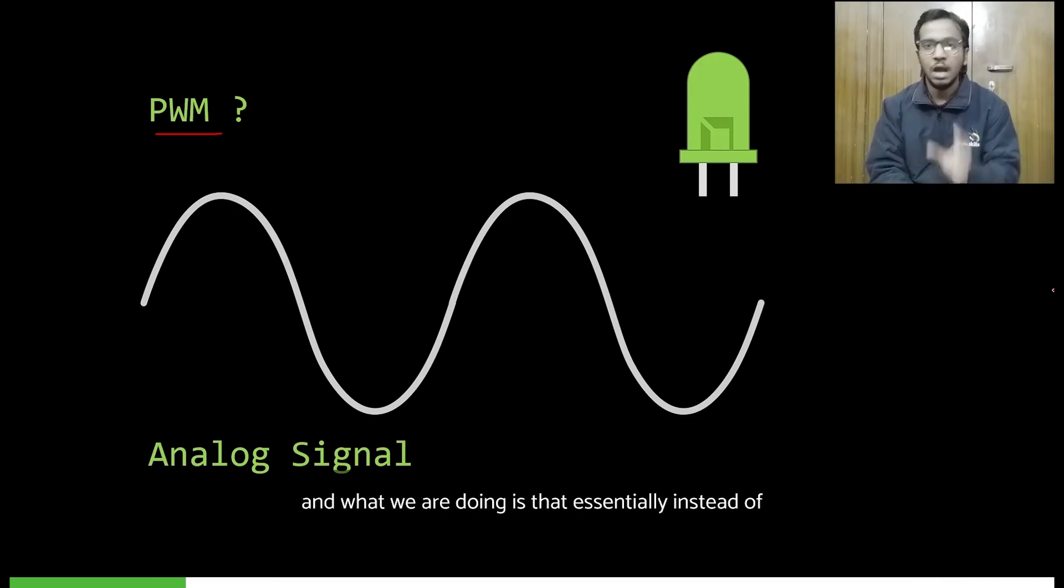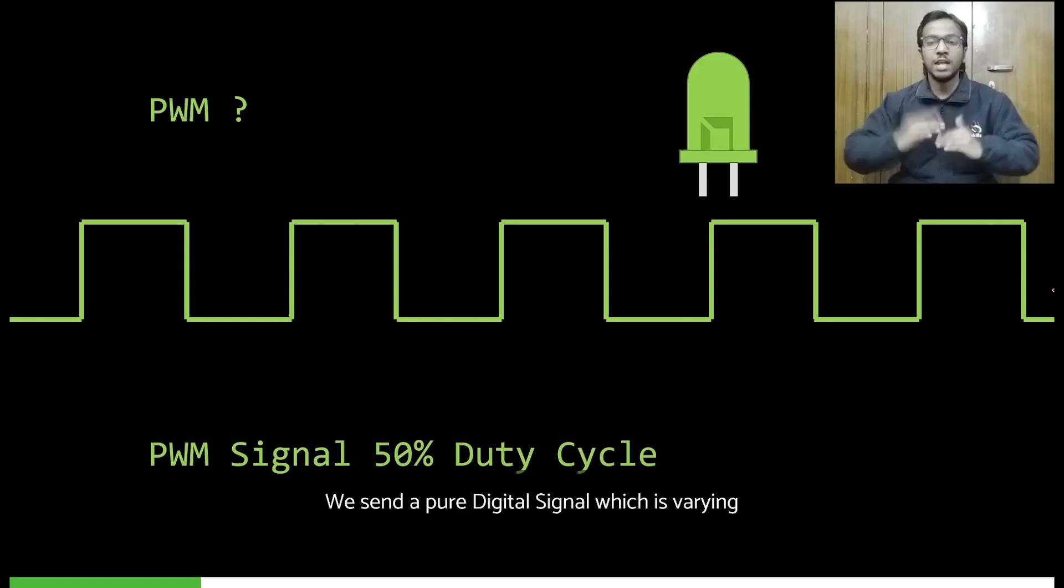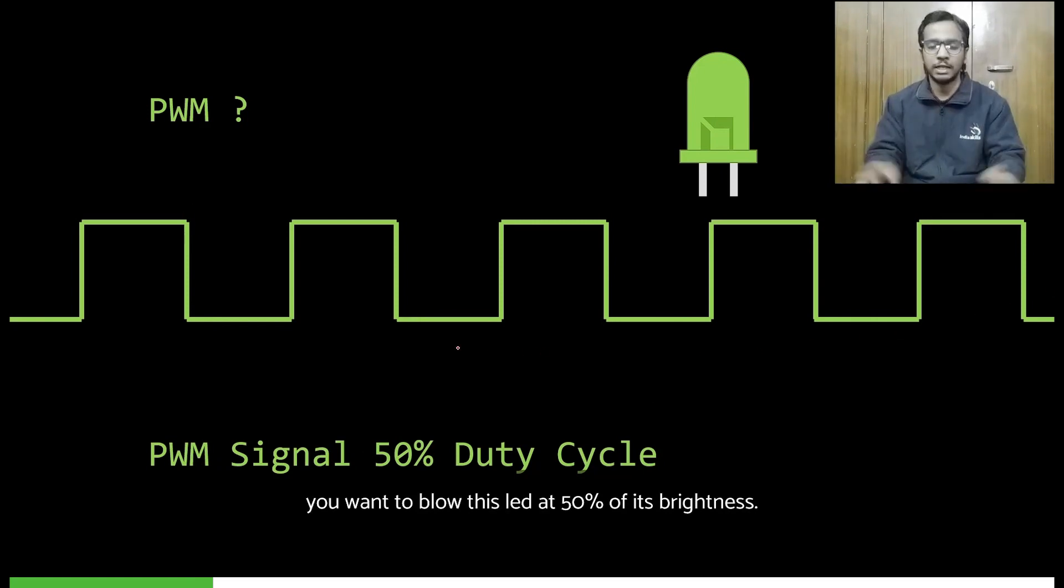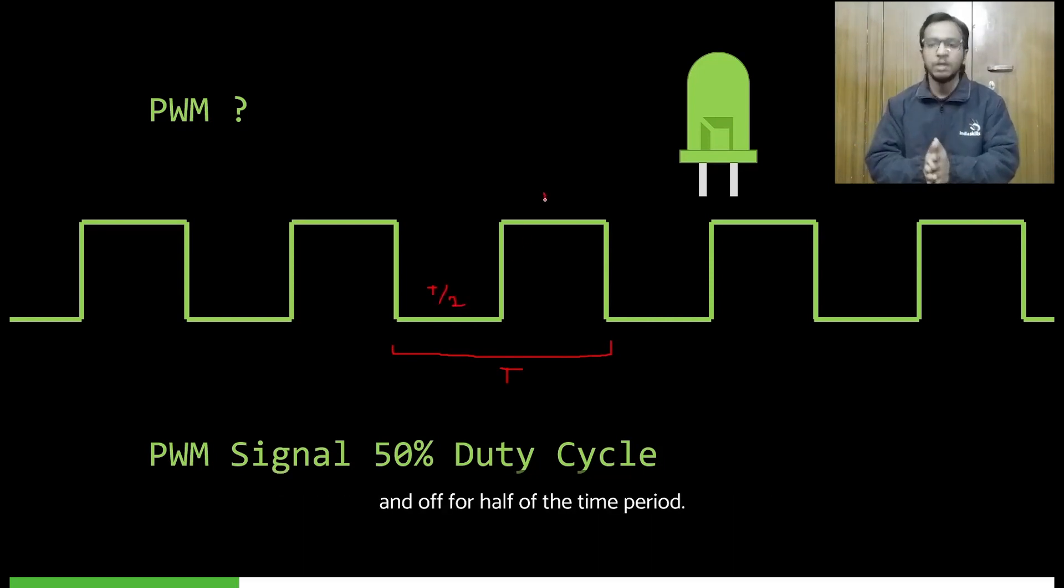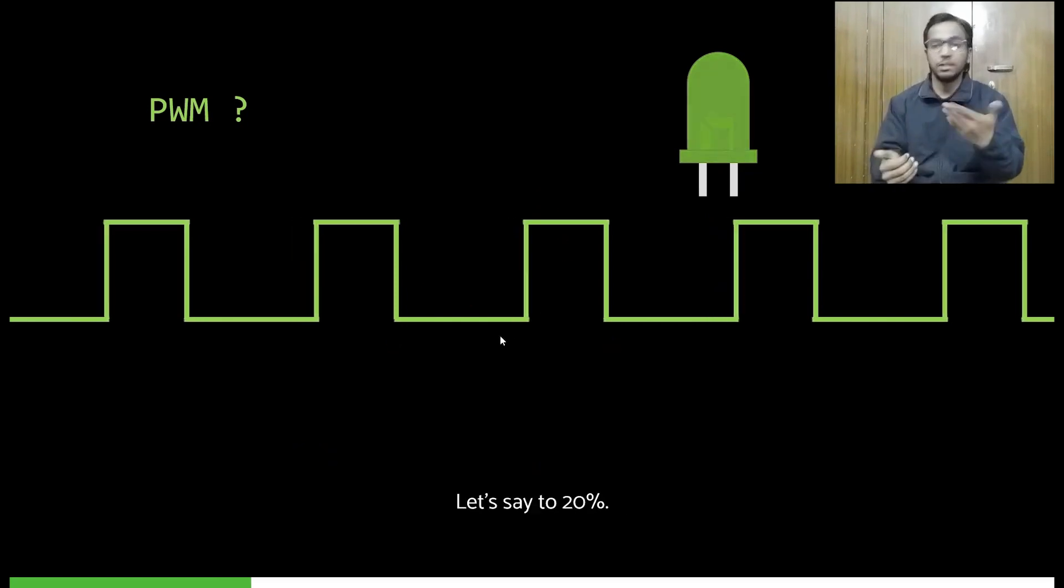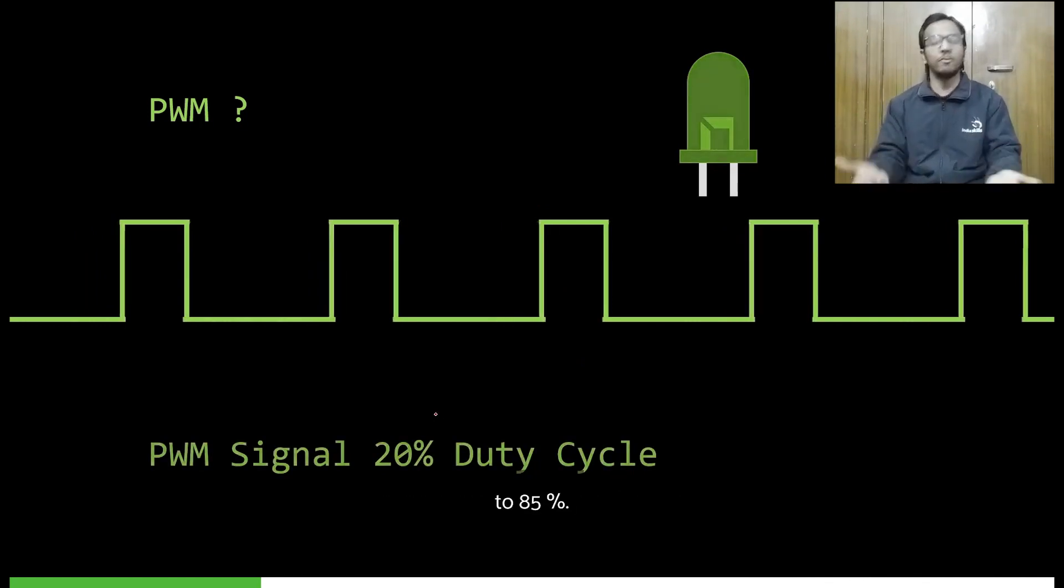So instead of having an analog signal, we use this technique called pulse width modulation. What we're doing is essentially, instead of sending an analog signal, we send a digital signal which is varying at a very high frequency. Here, for example, you want to glow this LED at 50% of its brightness, so you send a signal with 50% duty cycle. Duty cycle stands for the ratio between the on time and the off time of your pulse. So here you can see that your pulse is on for half of the duration and off for half of the time period, so that gives us 50% brightness. If you want to decrease the brightness, you decrease the duty cycle, let's say to 20%. If you want to increase the brightness, you increase the duty cycle, let's say to 85%.